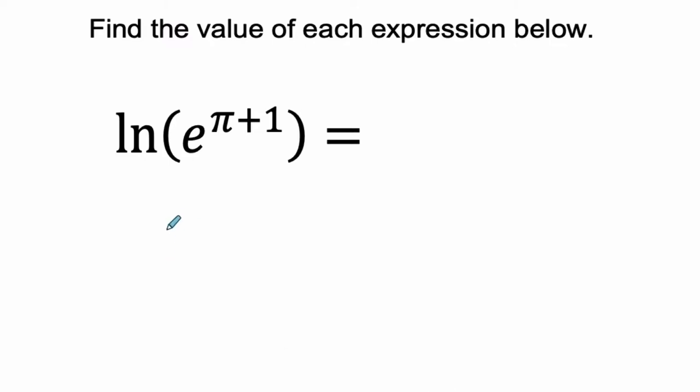Okay, so what is happening here? Well, this ln refers to the natural logarithm. And that means we're dealing with the log base e of e to the pi plus 1. This is actually what we're dealing with.